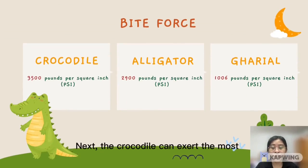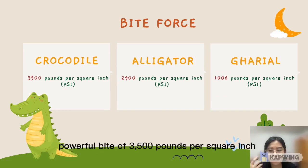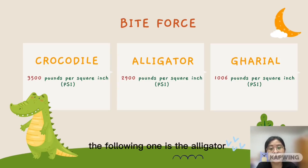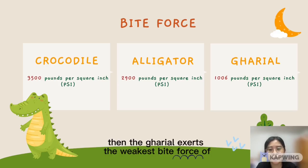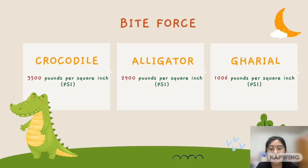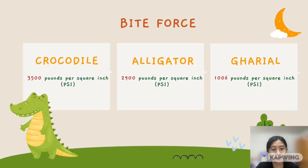Next, the crocodile can exert the most powerful bite of 3,500 pounds per square inch. The alligator exerts 2,900 pounds per square inch. The gharial exerts the weakest bite force of 1,006 pounds per square inch.